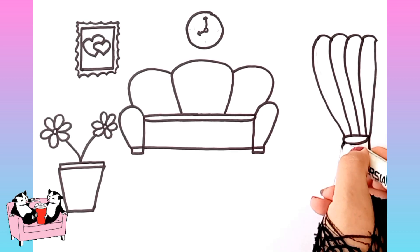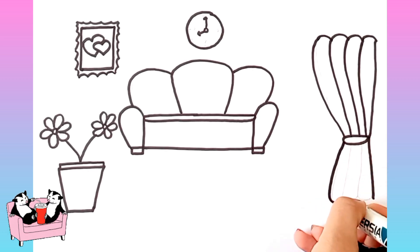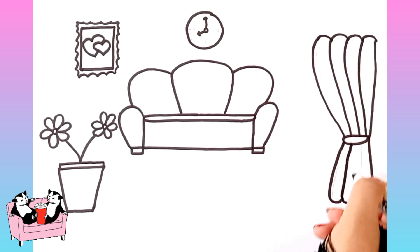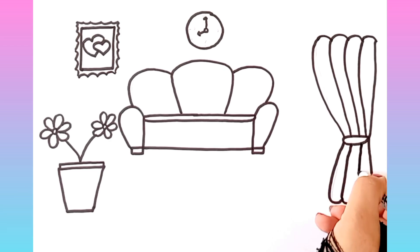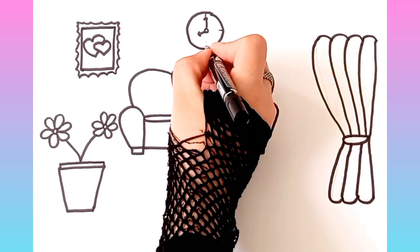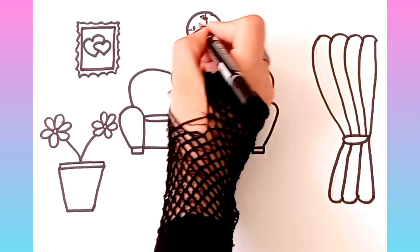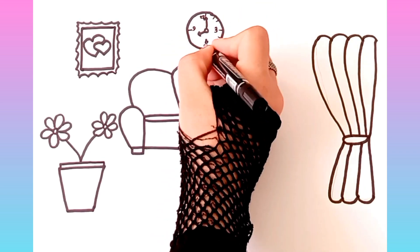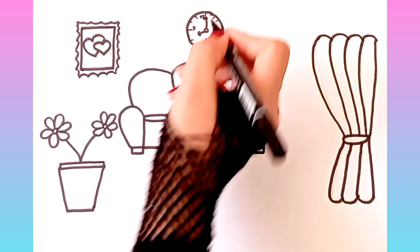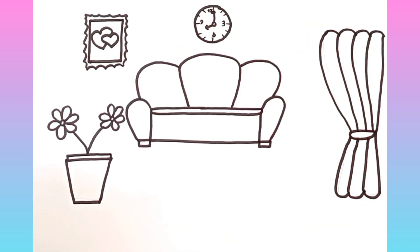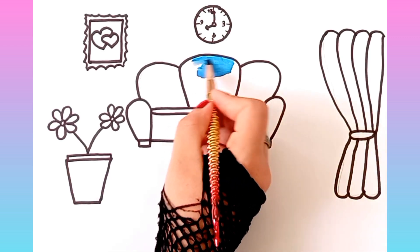T is for toad, t, t, toad. U is for umbrella, u, u, umbrella. V is for violin, v, v, violin.